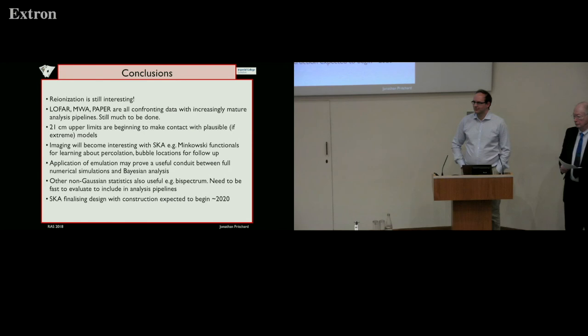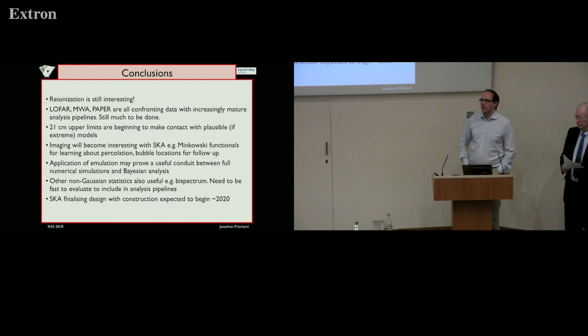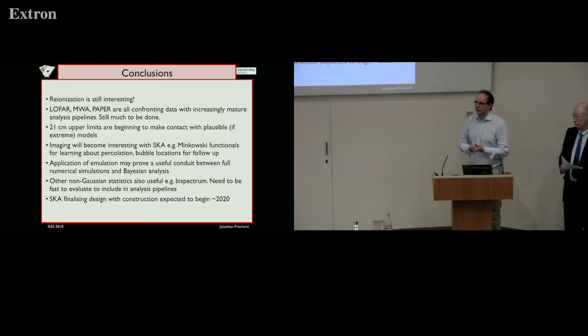Question about Minkowski functionals for bubble topology: on simulations that seems okay, but if you have data with literal holes from a mask or the edge of your survey, is there a simple way to fix that? Answer: Measuring Minkowski functionals on the CMB hasn't been the easiest thing to do. There are some advantages here in that your signal is not mean zero, so noise and signal are somewhat separated. Dealing with edge effects isn't something I've thought about — in general that area is very undeveloped. People need to sit down and think about how practical it is.